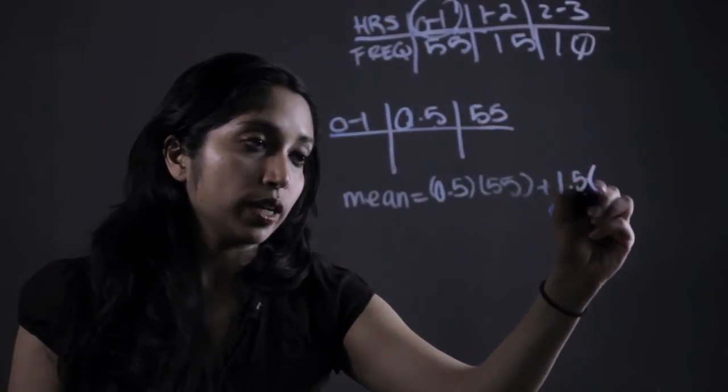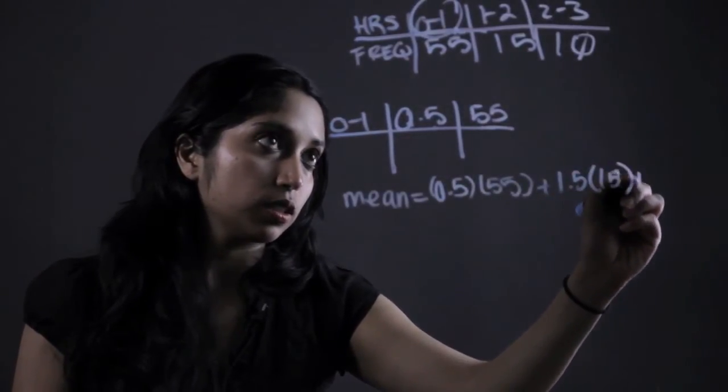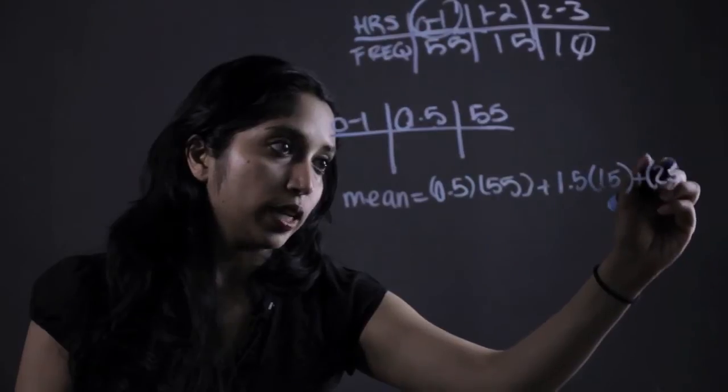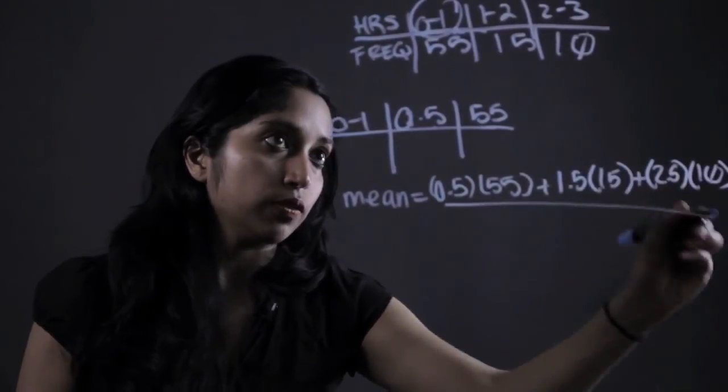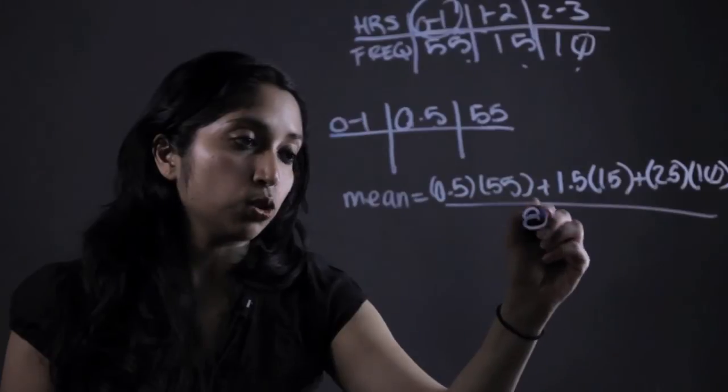Take 0.5, and then we would take 1.5 times 15, 2.5 times 10, and divide that by—if you add all these up—we have 80 total numbers.